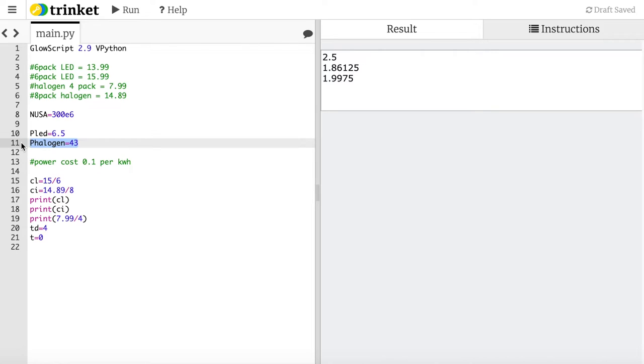So now I have the cost per LED - it's 15.99 divided by six. The cost for an incandescent is 7.99 divided by four. Now I don't need to print that stuff out anymore.